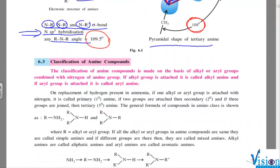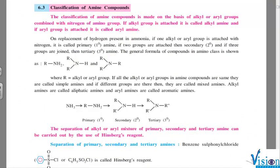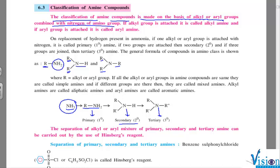As I had already classified, the classification of amine compounds is made on the basis of alkyl or aryl groups combined with nitrogen or amino group. If nitrogen has one alkyl or aryl group attached, then we call it primary amine. If two alkyl or aryl groups are attached, we call it secondary. And if three are attached, we call it tertiary. They are saying it in a different way also: if you have ammonia and one hydrogen is replaced, we call it primary amine. Two hydrogens replaced, secondary amine. Three hydrogens replaced, tertiary amine.